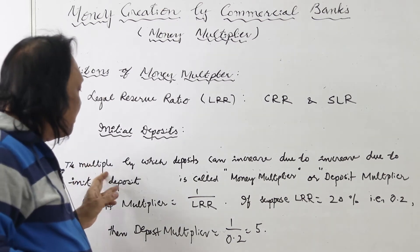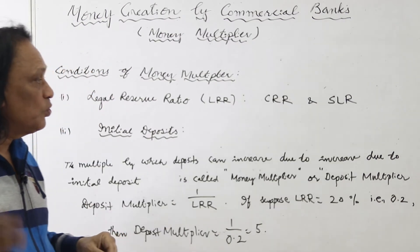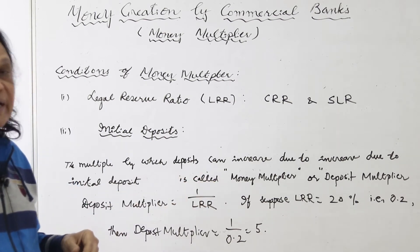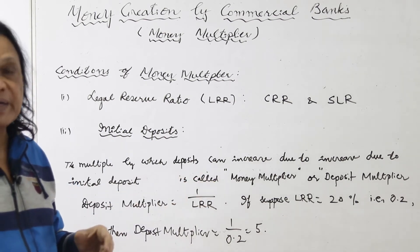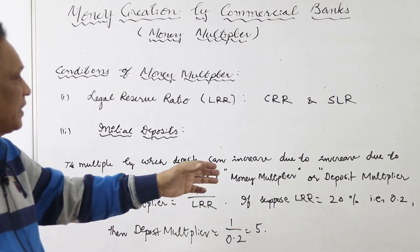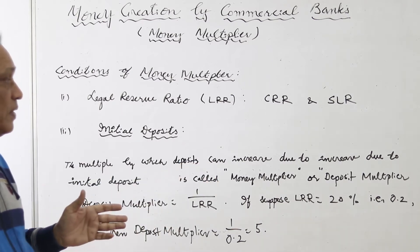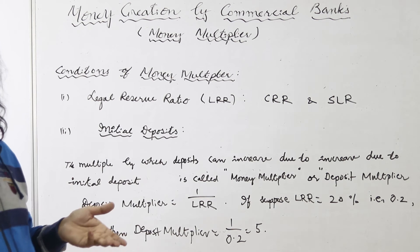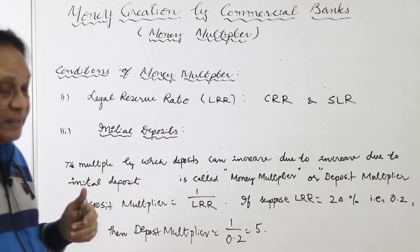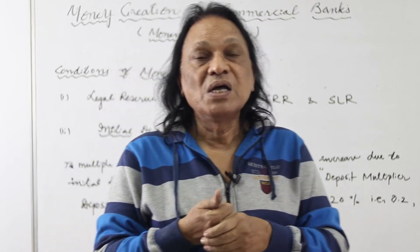Money multiplier is defined as the multiple by which deposits can increase due to an increase in initial deposit. It is simply a number by which you multiply the initial deposit to get the total money creation by the commercial banks.